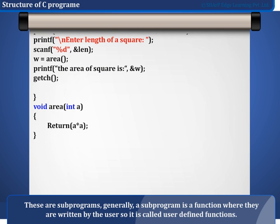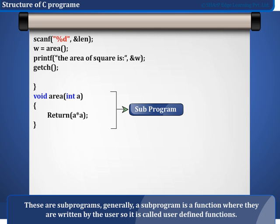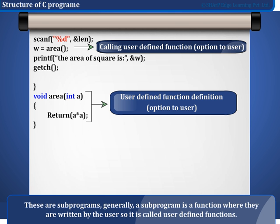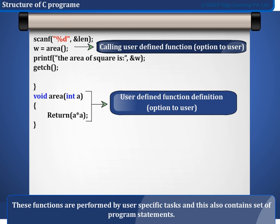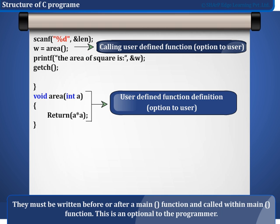These are subprograms. Generally, a subprogram is a function written by the user, so it is called a user-defined function. These functions perform user-specific tasks and contain a set of program statements. They must be written before or after the main function and called within the main function. This is optional to the programmer.